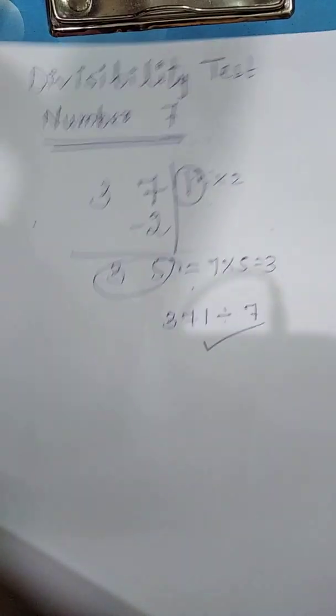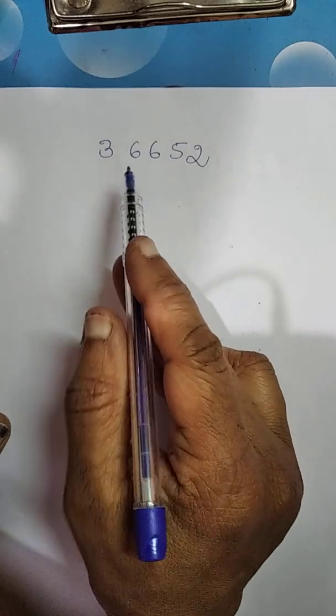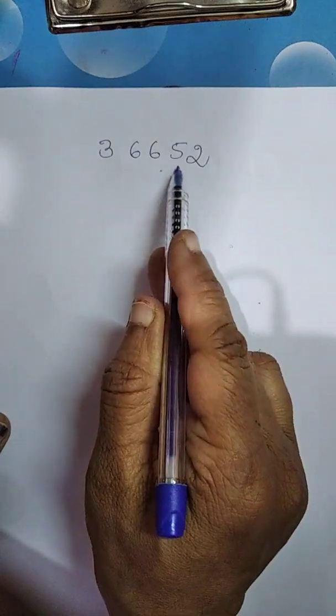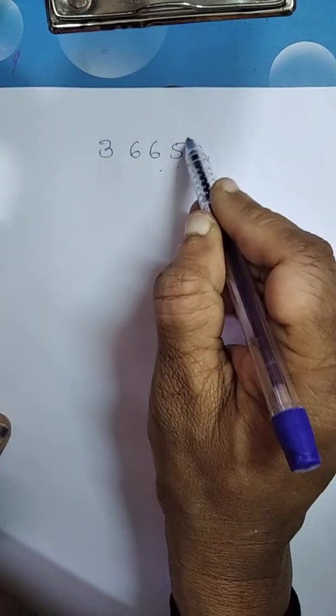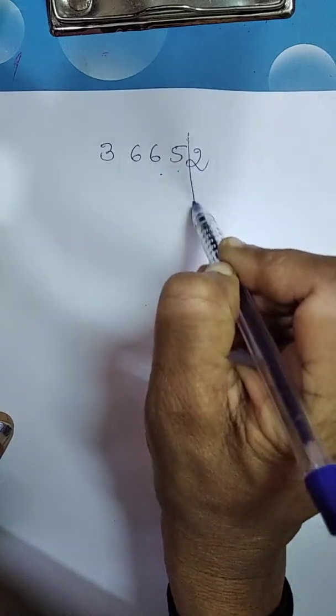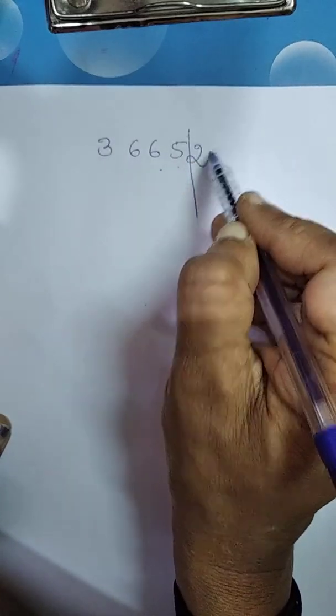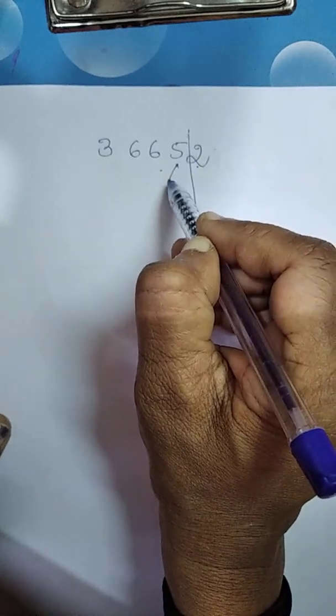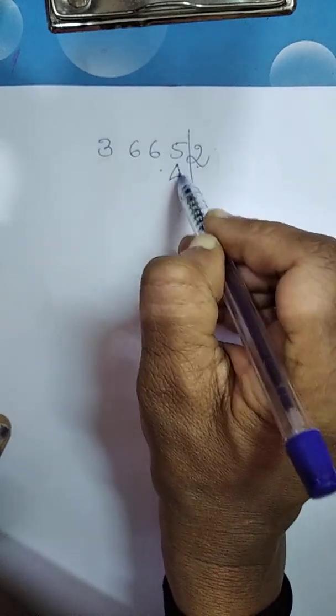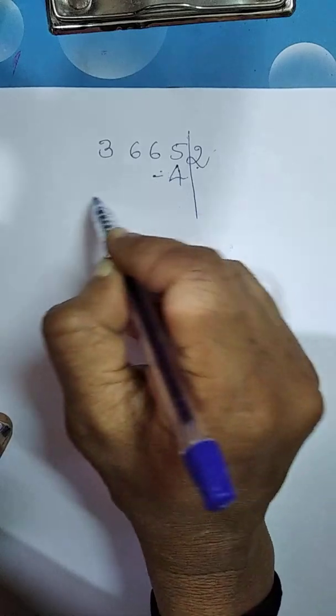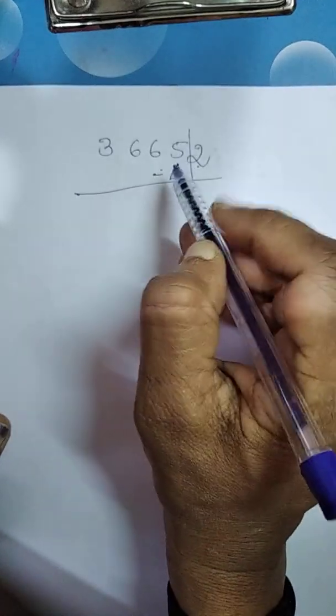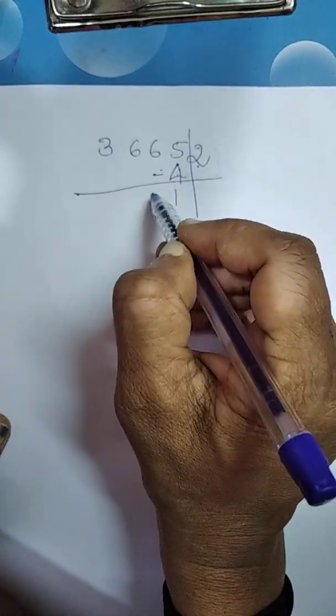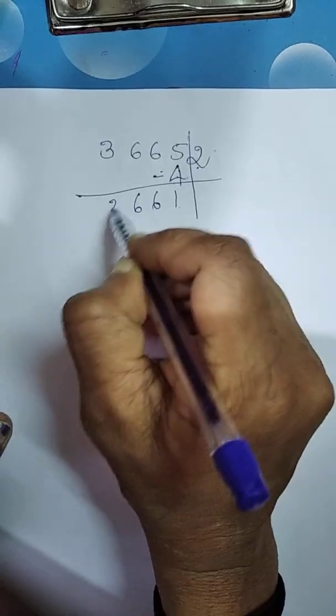Let us take one more number. That is, 36652. What is our procedure? Select last digit and double it. What is double of 2? 4. Just below the remaining part. Now, subtract it. 5 minus 4 is 1, 6, 6, 3.